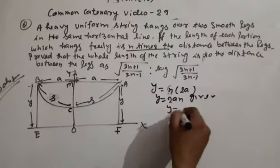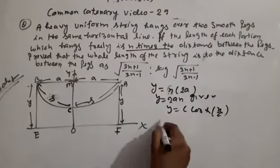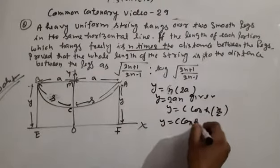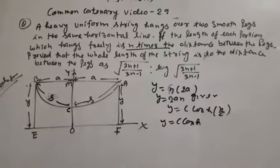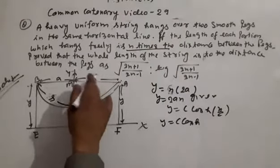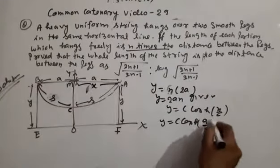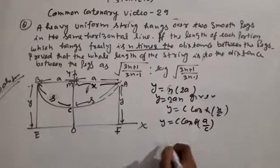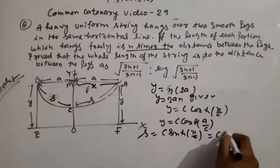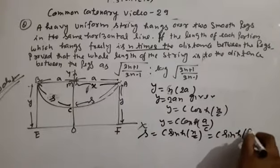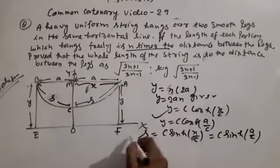From the catenary equations: y = c · cosh(x/c). Here we put x = a, giving y = c · cosh(a/c). Also s = c · sinh(a/c).